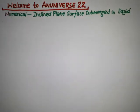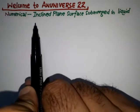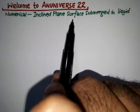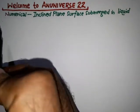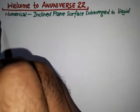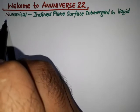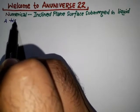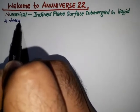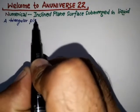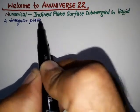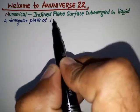Hello friends, welcome to N Universe 22. In this video we will try to solve a numerical that is based on an inclined plane surface submerged in liquid. First, I write the statement: a triangular plate of 1 meter base and 1.5 meter altitude is immersed or submerged in water.